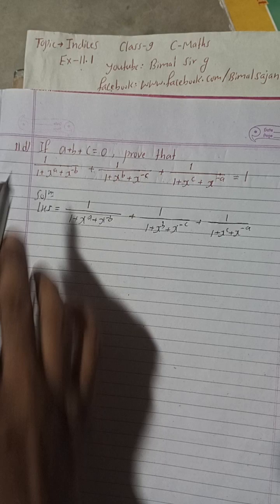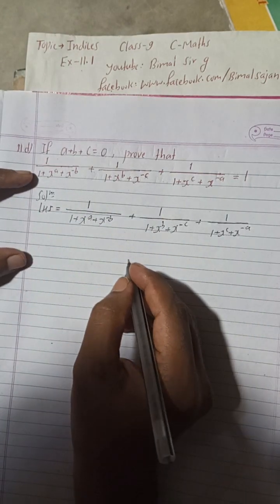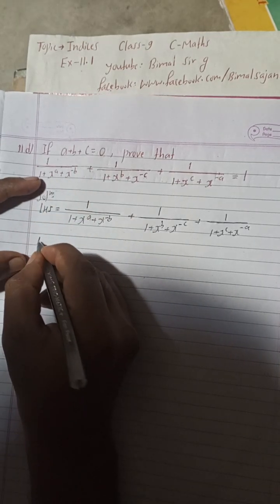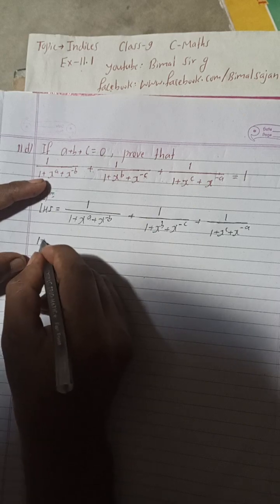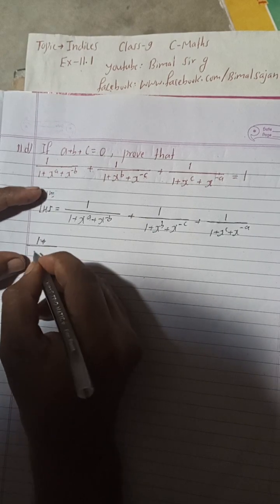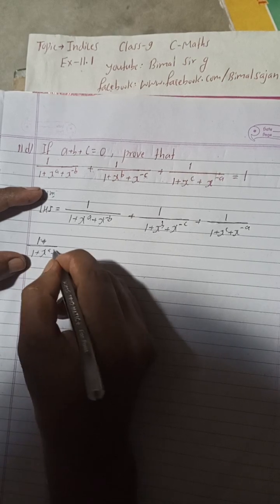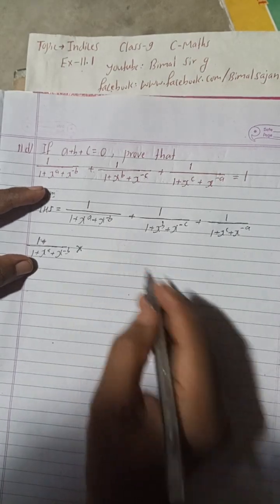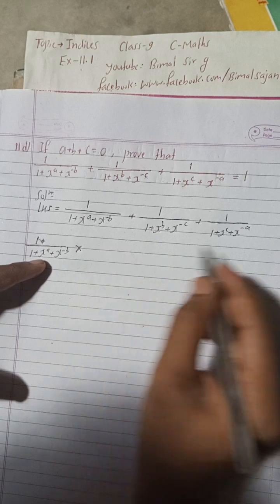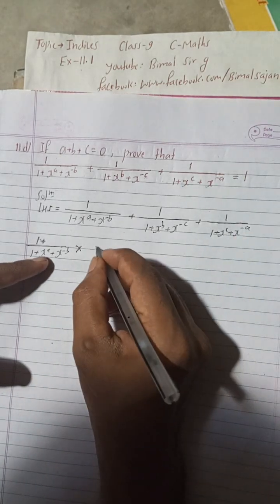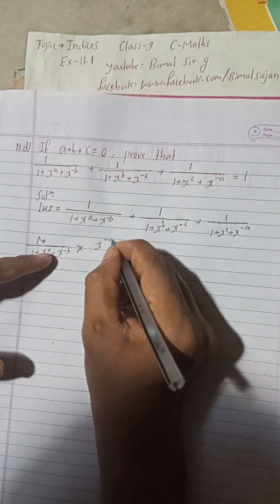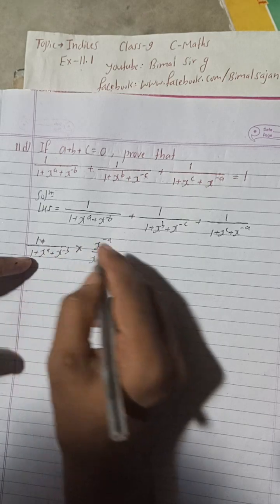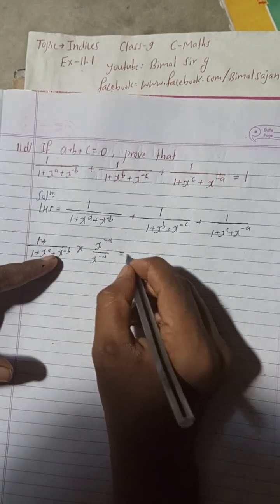So the LHS part is taken here. The logic behind this: I will take the first part, which is 1/(1+x^a+x^(-b)). Now what I will do is multiply this — if I multiply up and divide by x^(-a), it will not affect the value because it will be 1. So on top we will get x^(-a).